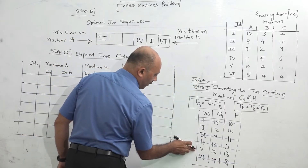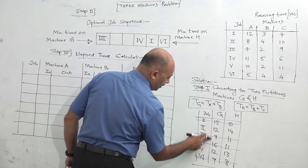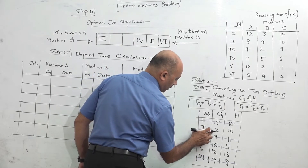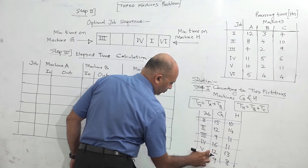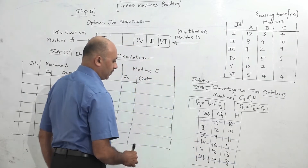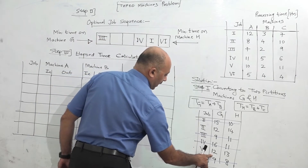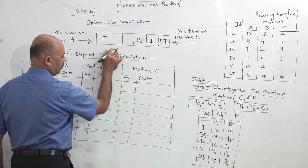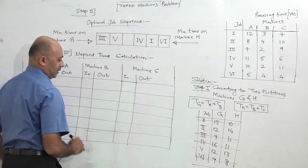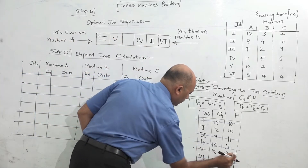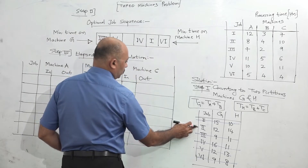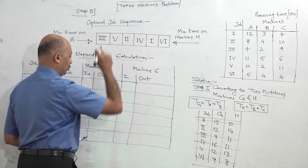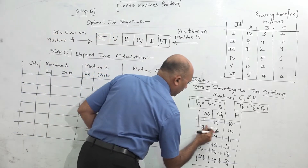Now 2 jobs remain: jobs 2 and 5. Both have G value of 12. Job 2's H value is 14 and job 5's H value is 13. Since job 5 has the lower H value and the time is less on G, job 5 goes from the left side. Only job 2 remains, which goes in the last box. All allocations are done.